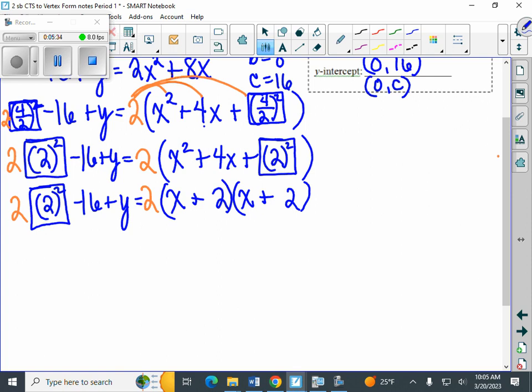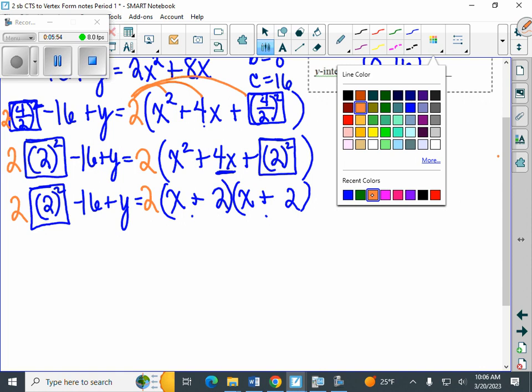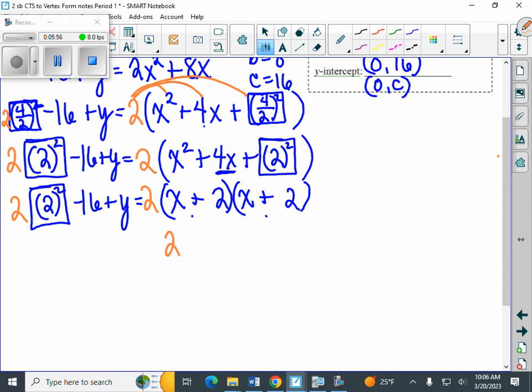But now we can condense over here on the right side. And by the way, before I forget, this 4x is hidden in our 2 parentheses. Common question, that 4x is hidden within those 2 parentheses. But we can, again, condense. So this is going to be 2. And then we have x plus 2 squared.